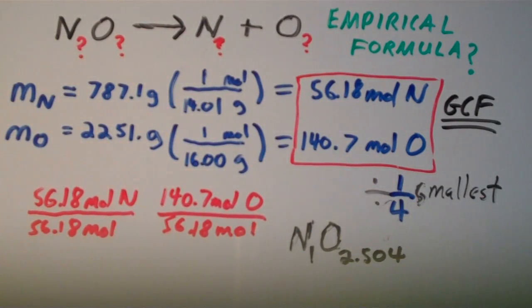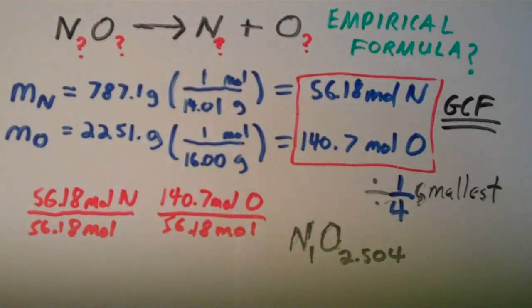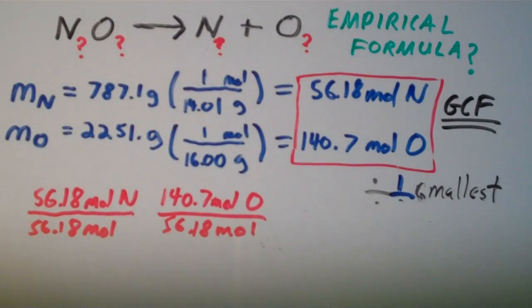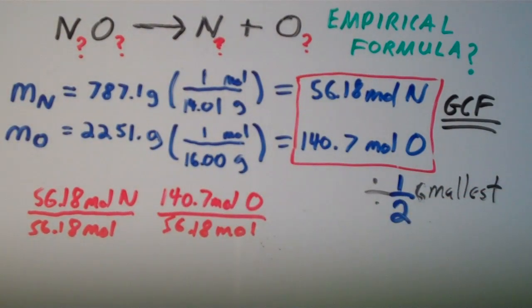The empirical formula must have whole number subscripts — it can't be 2.5, because it doesn't make sense to say a molecule has 2.5 oxygen atoms; atoms are, by most means, indestructible. So dividing by the smallest value didn't work. We must now divide by one half of the smallest value.